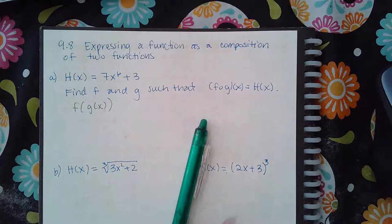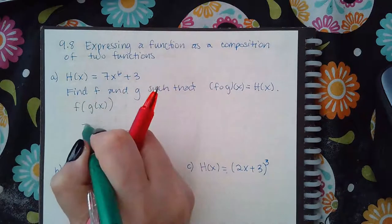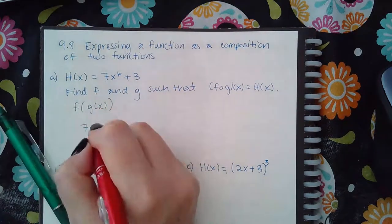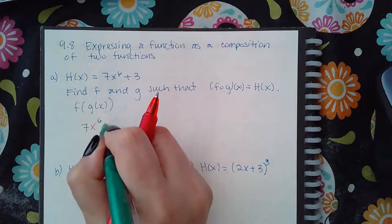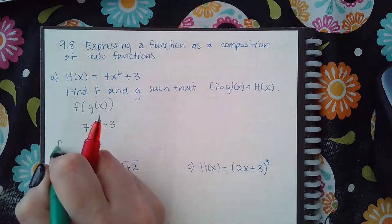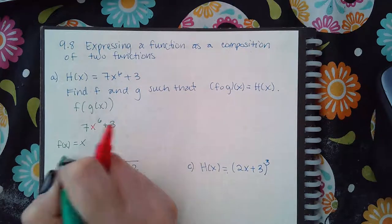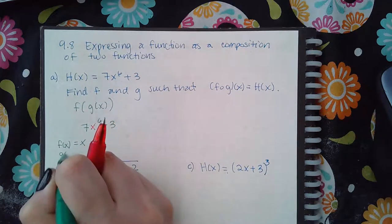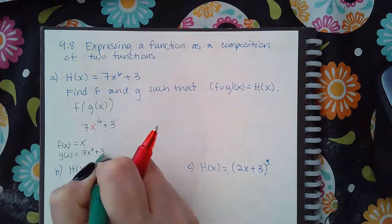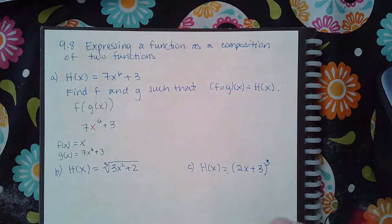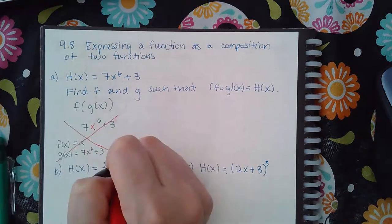What I'll see people do is see the problem and say the inside is x and g of x is the outside, which is 7x to the 6th plus 3. This is completely wrong — you have not done what the problem asked.